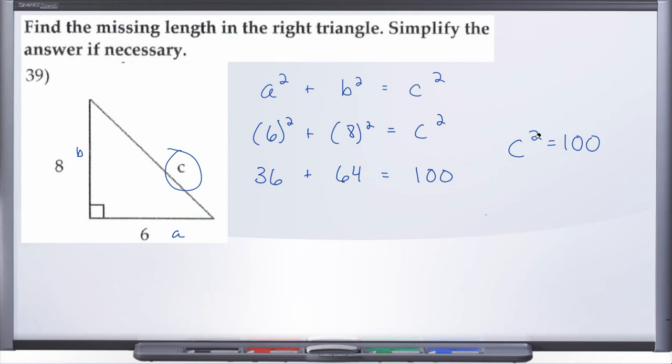We're going to go ahead and take the square root of both sides so you can see that a little better. When we take the square root on the left here, this square root function cancels one of the powers and so we're left with c on the left. Now here on the right, we're taking the square root of 100.